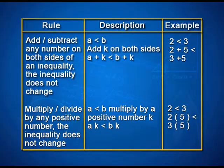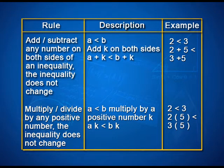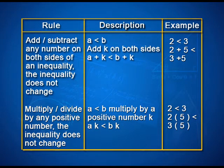Let us summarize the rules. If we add or subtract any number on both sides of a linear inequality, the inequality does not change. That is, if a is less than b and we add a number k on both sides, then a plus k is less than b plus k. For example, 2 less than 3 implies 2 plus 5 is also less than 3 plus 5.